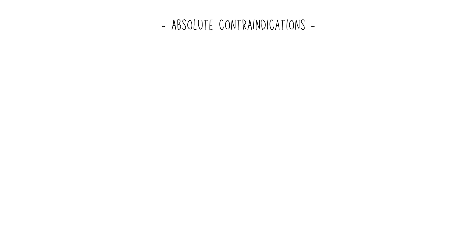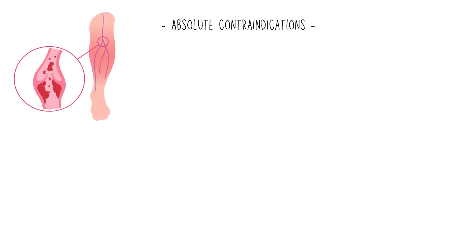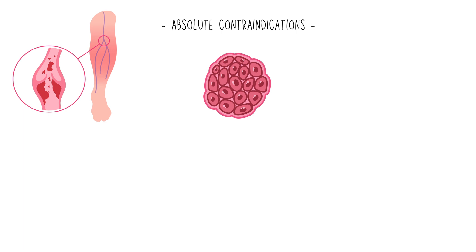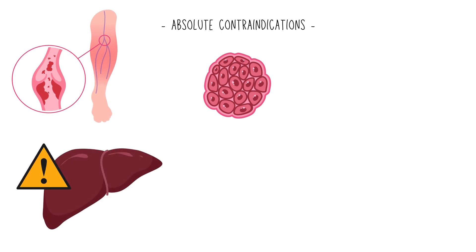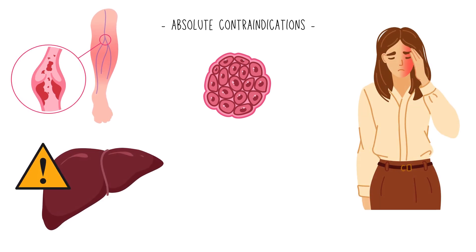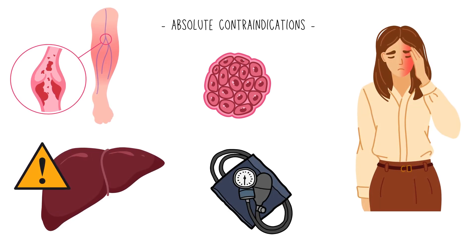Absolute contraindications for the use of contraceptive pills include the following: history of thromboembolic disorders, estrogen-dependent tumors, severe liver disease, migraine with aura, and uncontrolled hypertension.